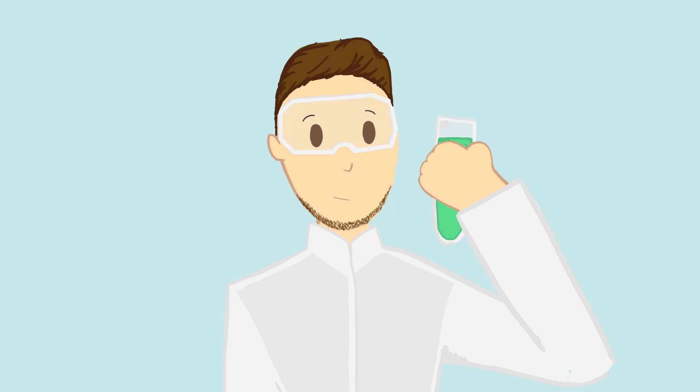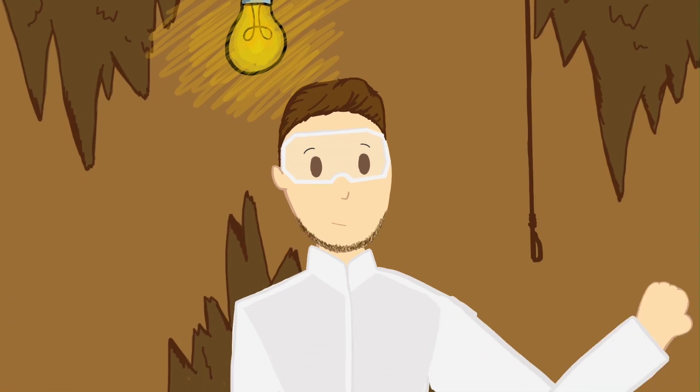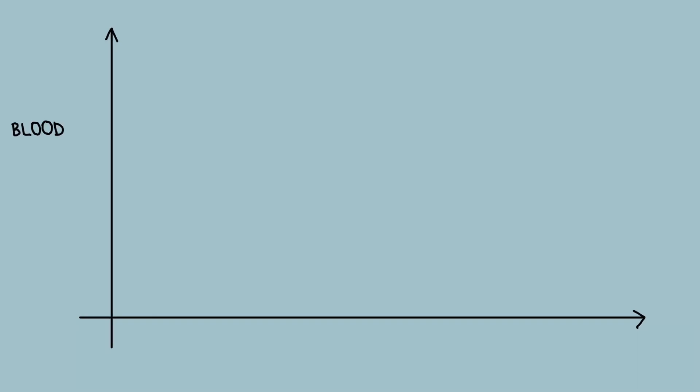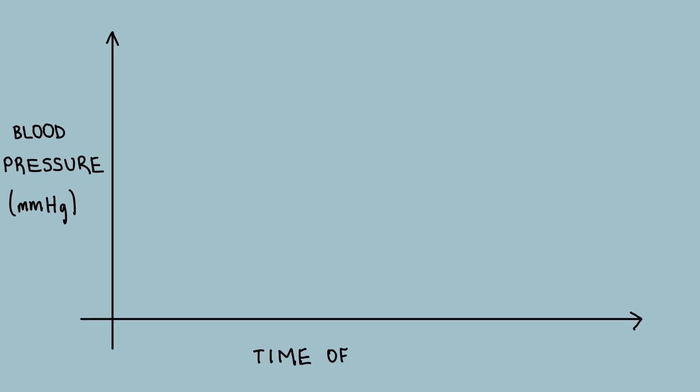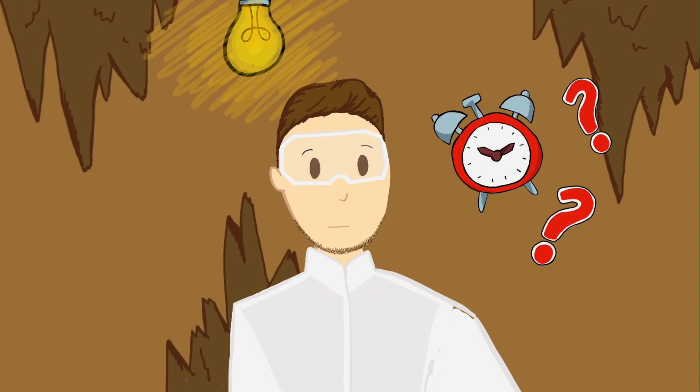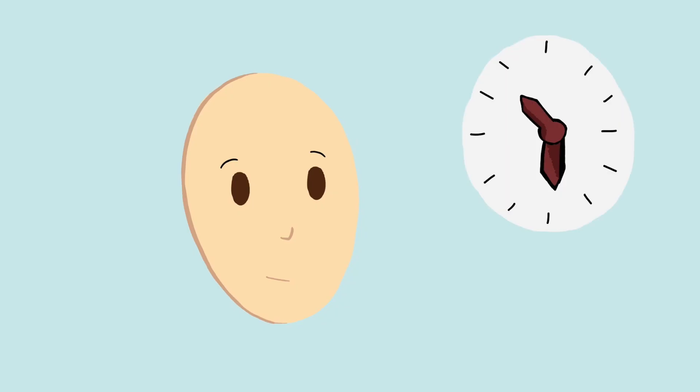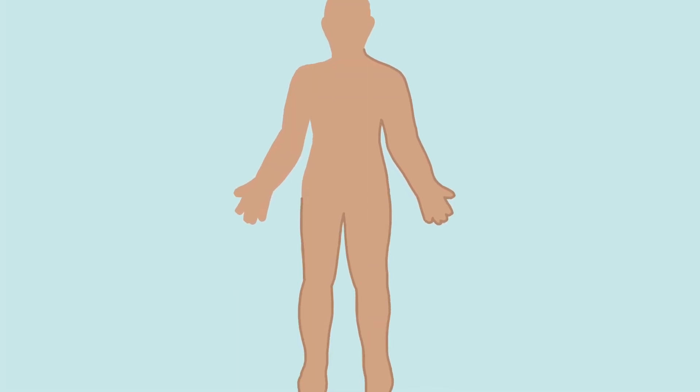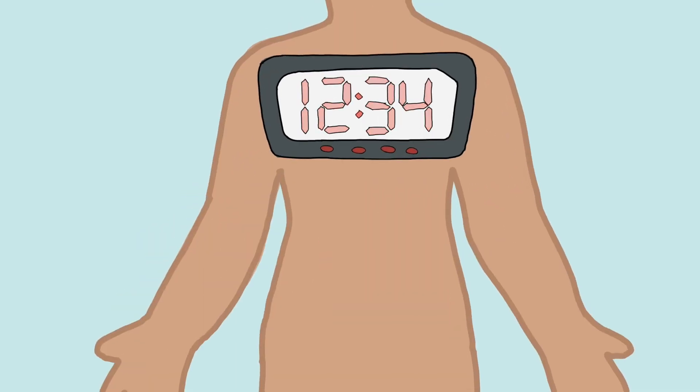In 1962, a brave or crazy scientist shut himself away from the world in a dark cave for several months. With the help of his team, he recorded the times that he slept and woke up and kept track of vital signs like blood pressure. Weirdly enough, even though he had no idea what time it was when he was inside the cave, the scientist felt sleepy at around the same time every day. This meant that even without any outside influences, his body had a way of keeping time: the body clock.